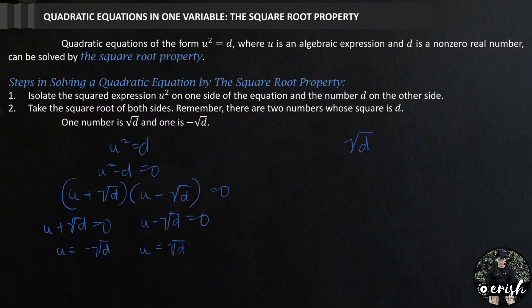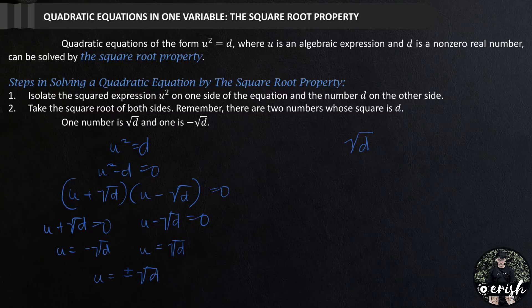Solving for each value of u, this is u equals negative square root of d and u equals positive square root of d. And because the solutions differ only in sign, we can write them in abbreviated notation as u equals positive or negative square root of d. We read this as u equals plus or minus square root of d. Now that we have verified these solutions, we can solve u squared equals d directly by taking the square root, which is what we call the square root property.